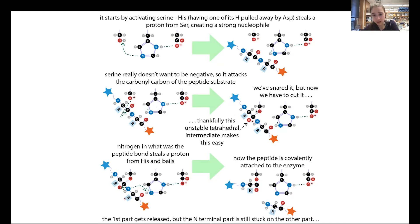Serine is going to attack the carbonyl carbon — remember how the oxygen was pulling away electron density, making this carbon electrophilic. Serine attacks and this gives you an unstable tetrahedral intermediate. This carbon is now attached to four different things, with a negative charge. It's not happy. There's a part of the protein called the oxyanion hole — an oxyanion is a negatively charged oxygen — and it's going to help it break the right way.